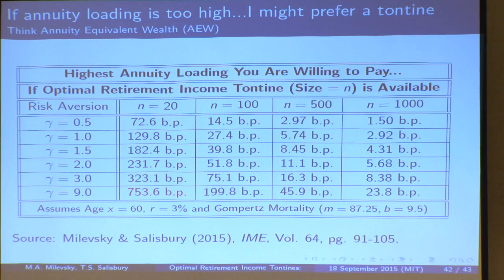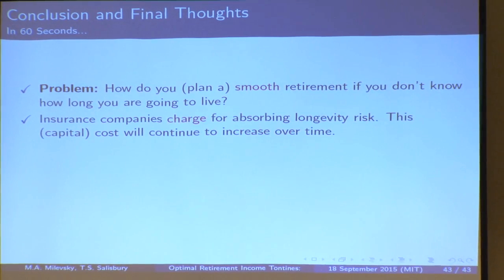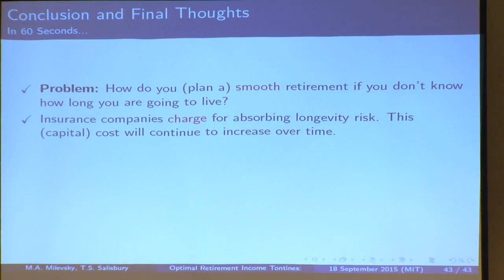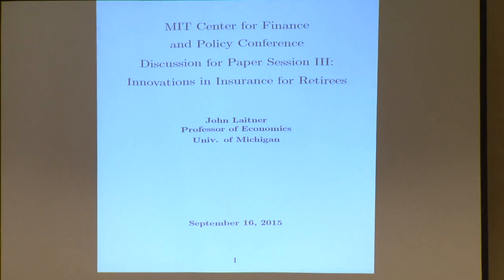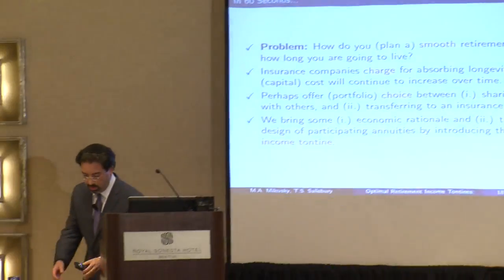In conclusion: how do we smooth consumption in retirement if we don't know how long we're going to live? Insurance companies will charge and continue to charge for absorbing longevity risk — it is not completely diversifiable. These capital costs are going to continue to increase, especially with Solvency 2 in Europe. I think there is a role for products that allow people to share this risk. Thank you very much for your patience.